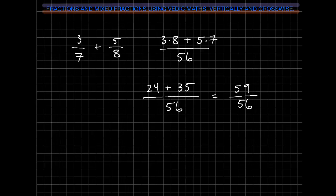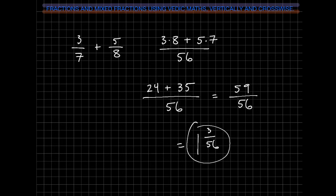Now we could change this into a mixed fraction, because you can see that it's top heavy. So how many times can 56 go into 59? Well, 56 goes into 59 one time with 3 left over. So our answer is 1 and 3 fifty-sixths.